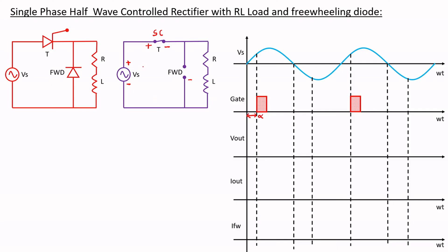The direction of current flow from the source starts here, moves in this direction, and then goes to the load in this particular direction. The output voltage is Vout in this case. The voltage across the inductor causes it to slowly start charging because of the flow of current, and the voltage across the inductor is given by VL = L·(di/dt).